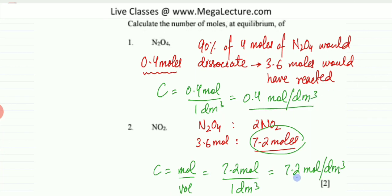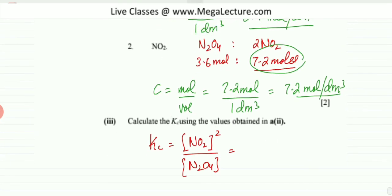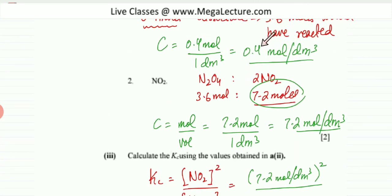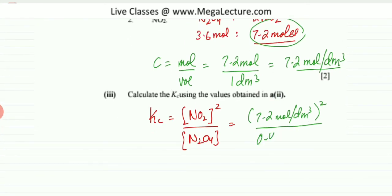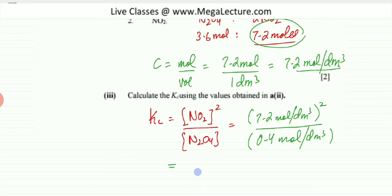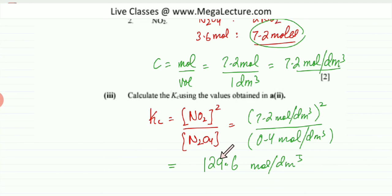Substituting into the Kc expression: (7.2 mol/dm³)² divided by (0.4 mol/dm³) gives Kc = 129.6. The unit for Kc is concentration squared divided by concentration — mol/dm³ squared divided by mol/dm³ — which simplifies to mol/dm³.